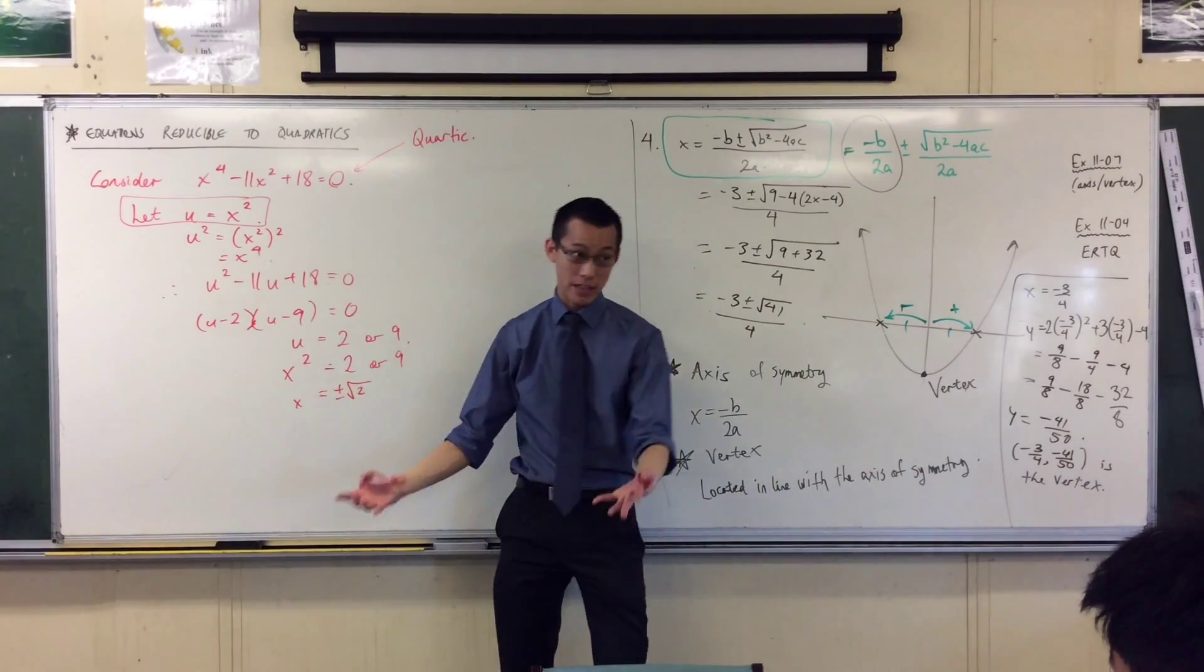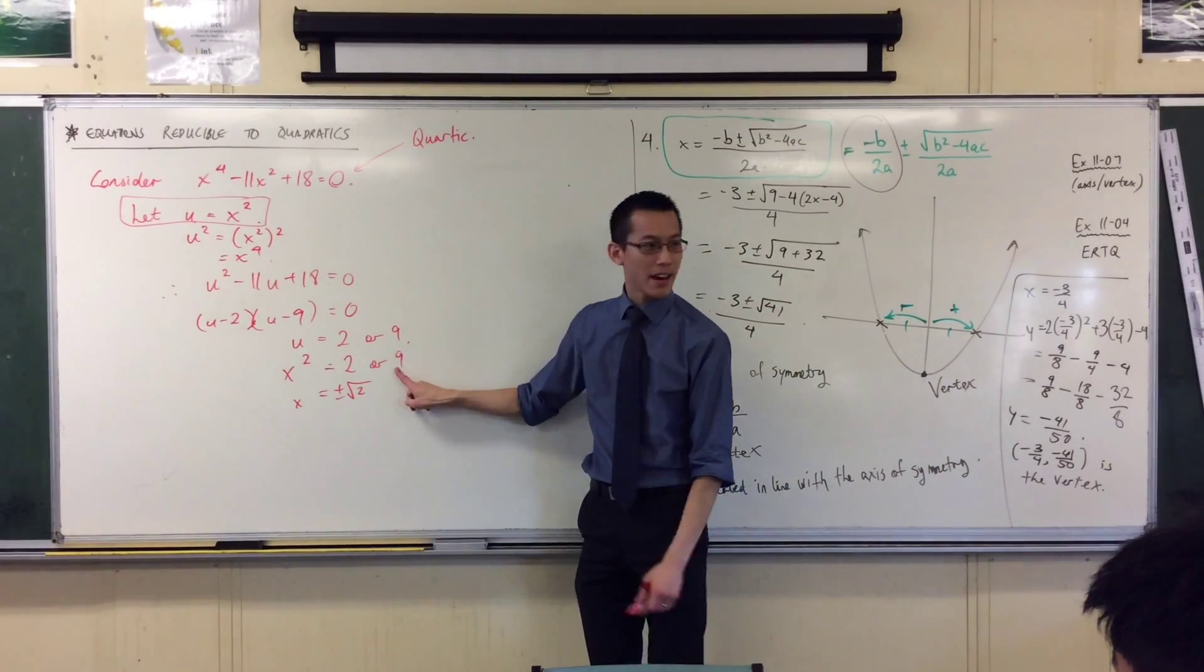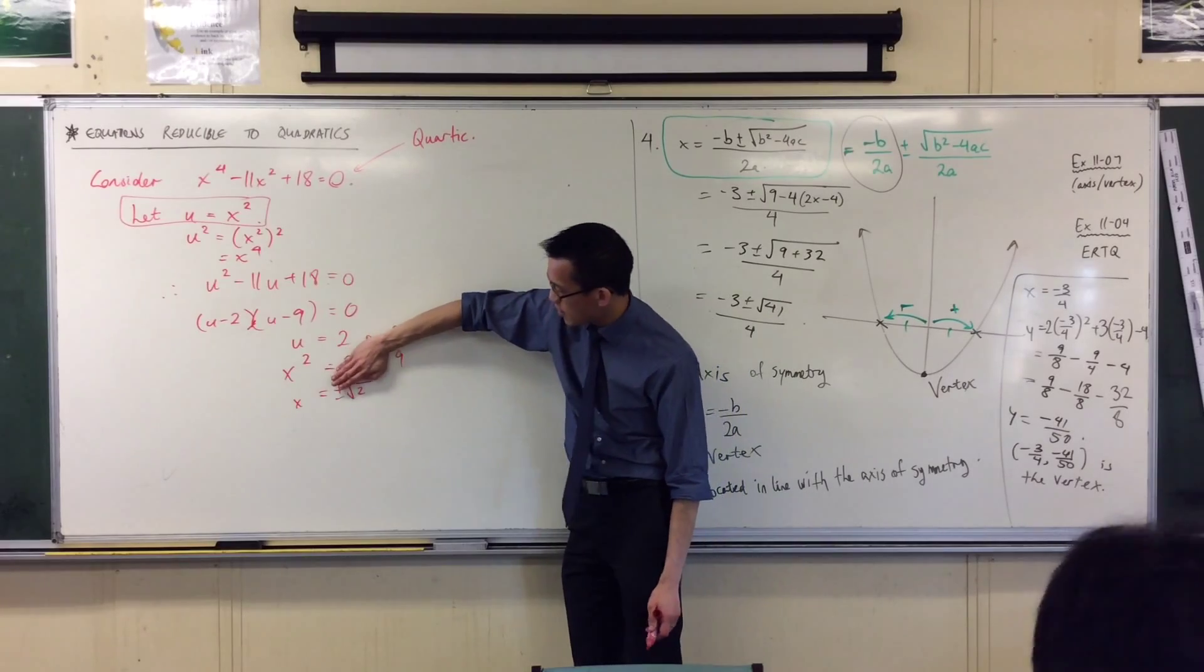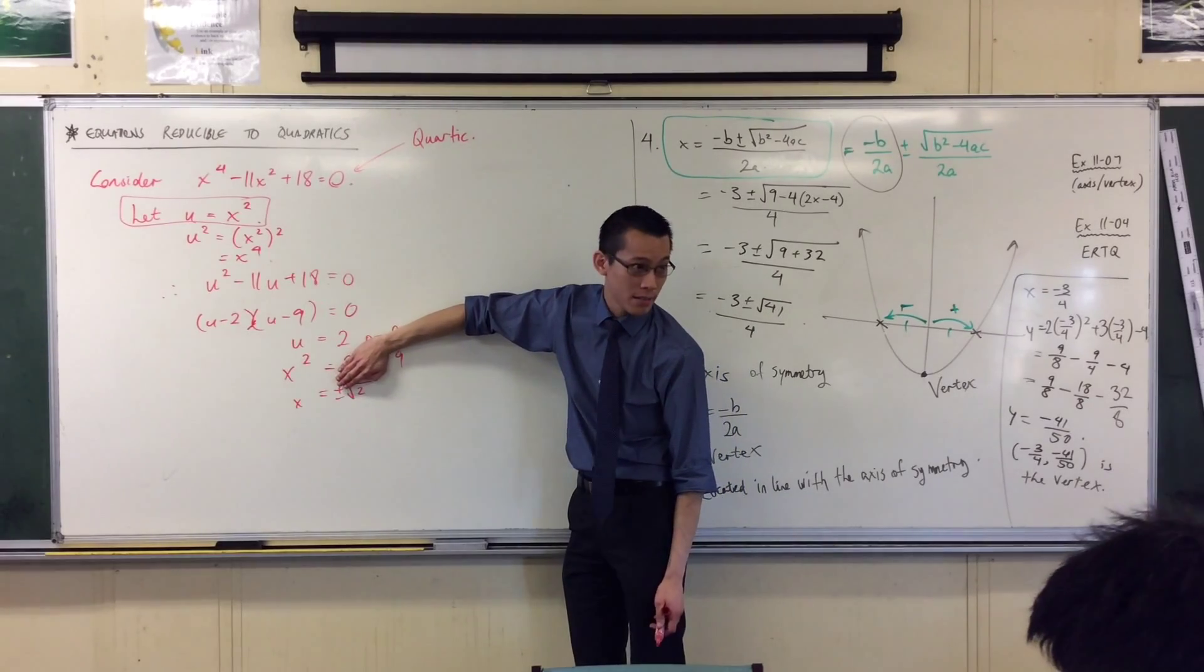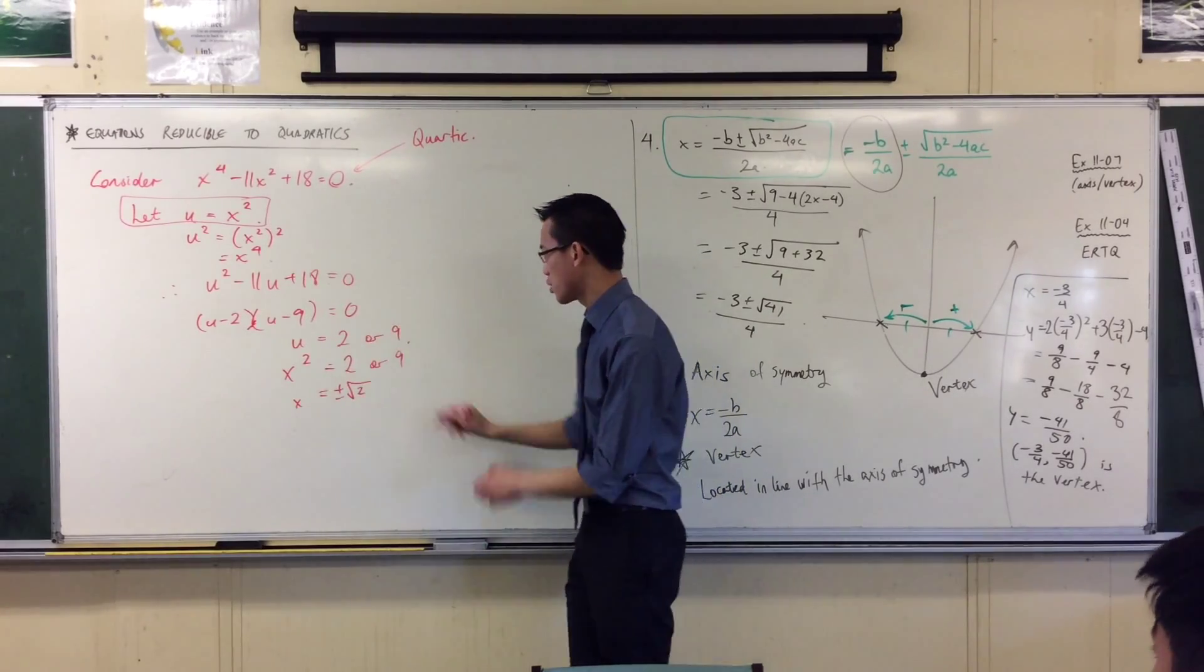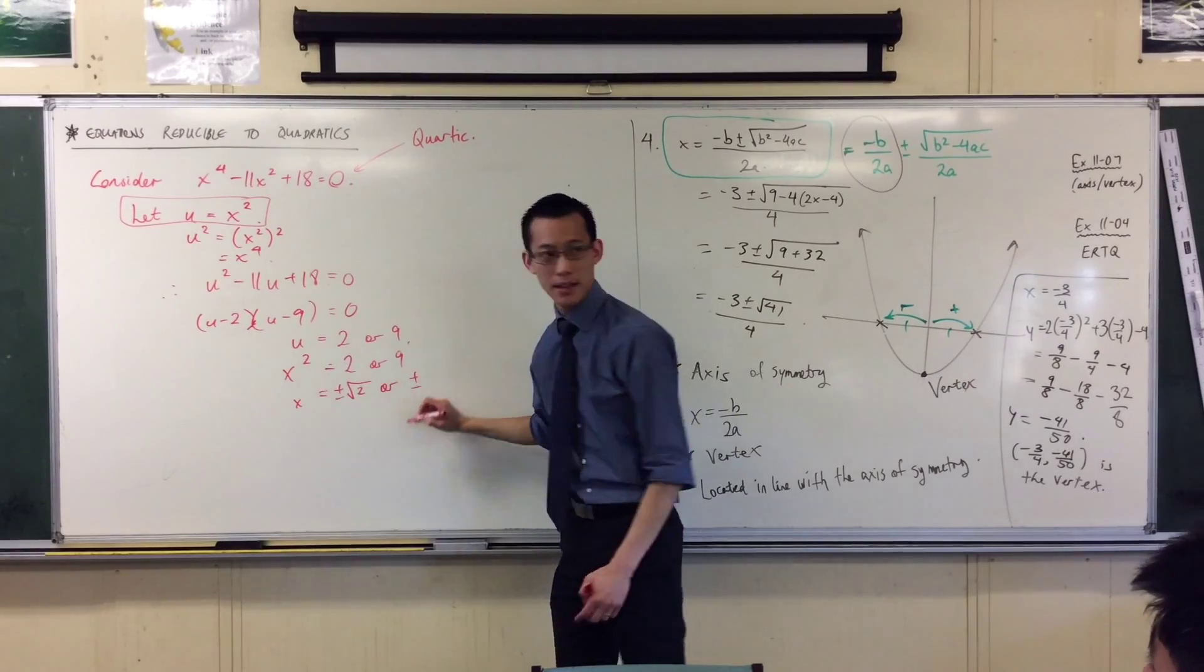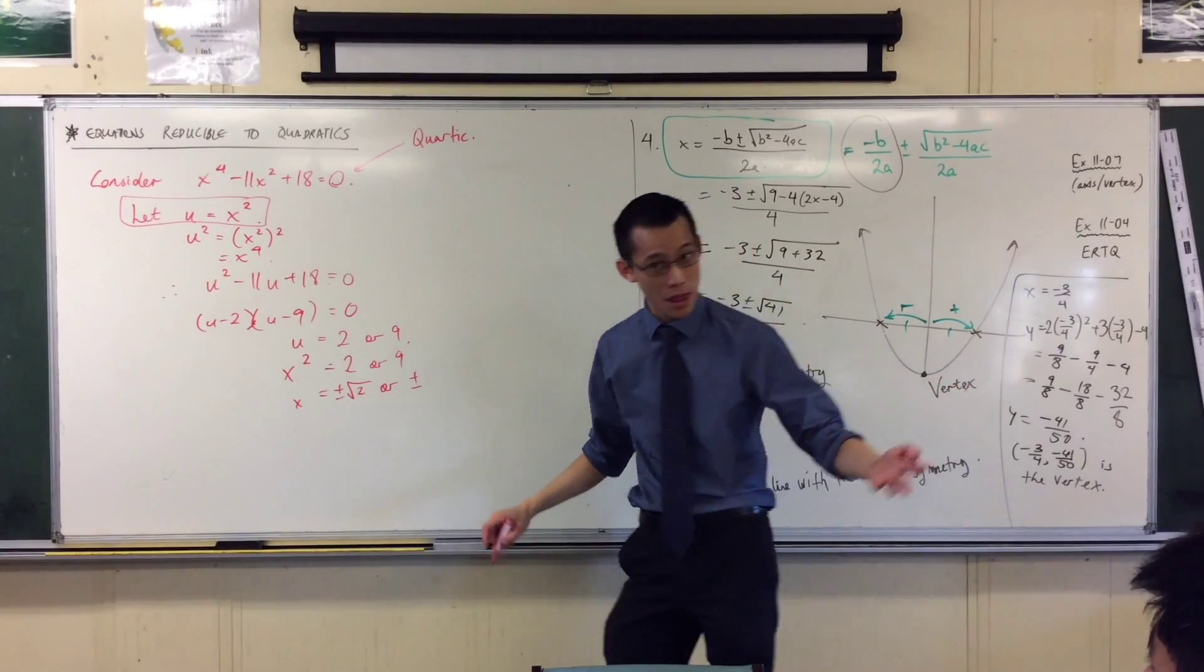But then you've got this other answer hanging around over here. So if this is all you saw, x squared equals nine, then you would also be able to say there's a plus or minus, and it's plus or minus three, because nine is a perfect square. So I'm finished.